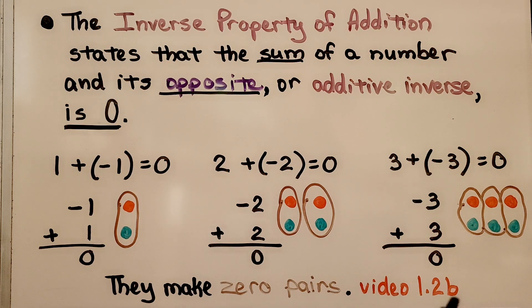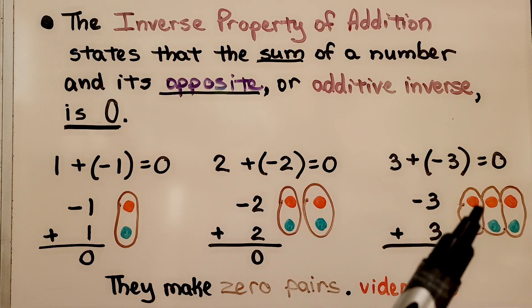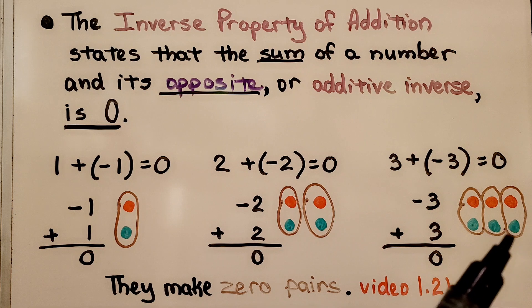Same with negative three plus positive three. We have three negative counters and three positive counters. They make zero pairs. They equal zero.